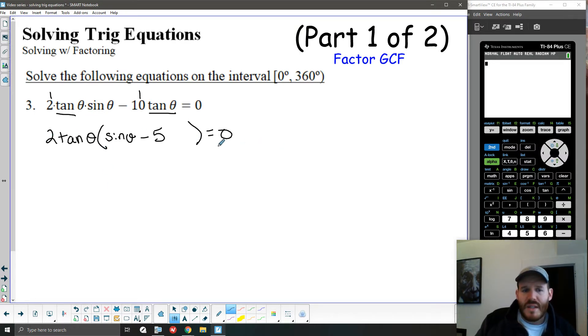From here, we can use the zero product property. Whenever I have a product of terms equaling zero, one of those terms must, in fact, be zero itself. So when the first term is zero, that would happen really whenever tan theta itself was equal to zero. And in the second expression, the second factor here would be zero whenever sine theta is equal to 5, because then that difference would be zero.